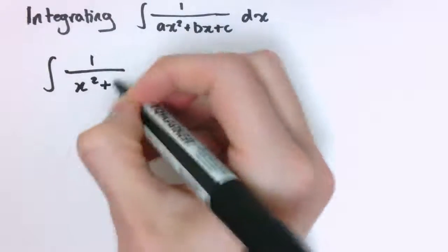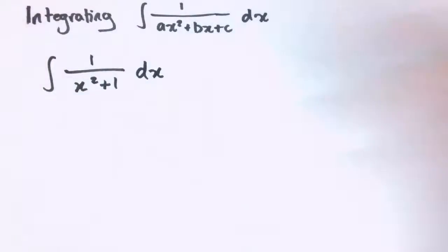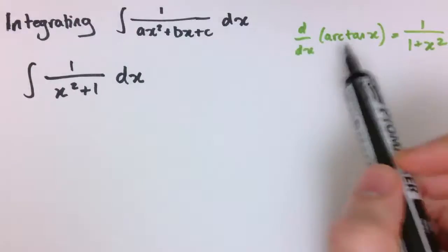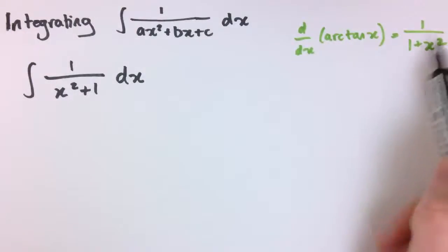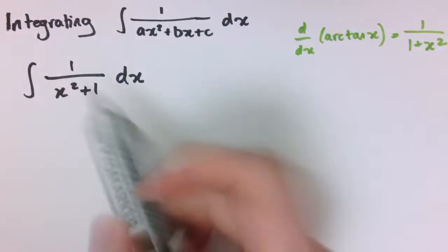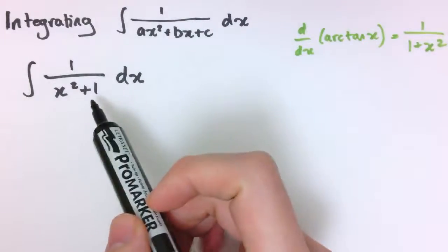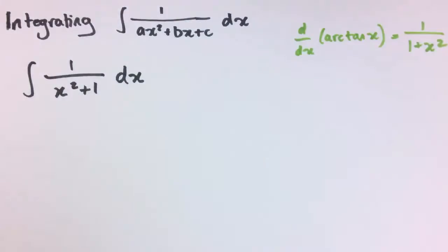So we'll start with the simplest possible one here, 1 divided by x squared plus 1 dx, and you may know that the derivative of arctan of x is 1 over 1 plus x squared, so we could just straight away write down the answer here that this is arctan of x.